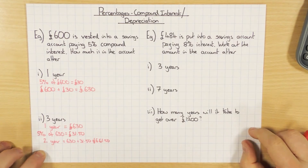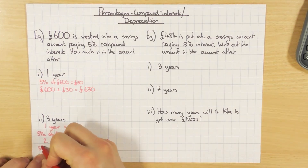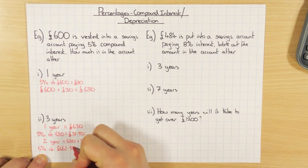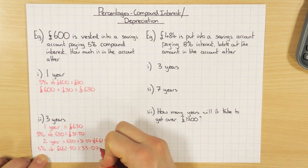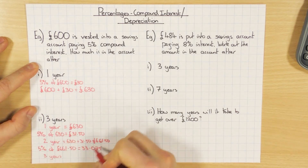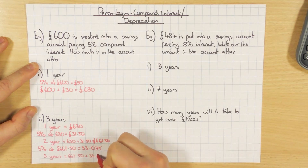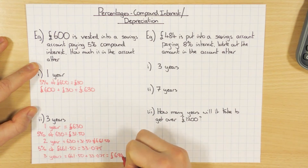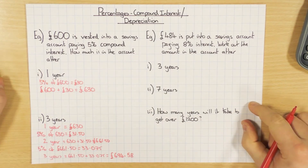Now for the third year, which is what this question is asking, I work out 5% of £661.50, which gives me £33.075. And then to get the answer after three years, I add those two together: £661.50 plus £33.075, which gives me £694.58. I rounded it to two decimal places because we're dealing with money — make sure you always do that.